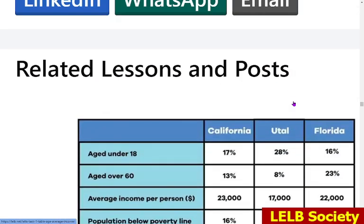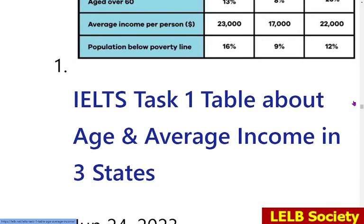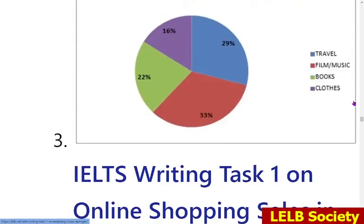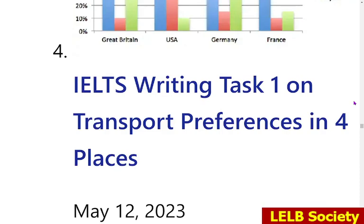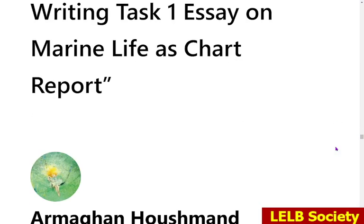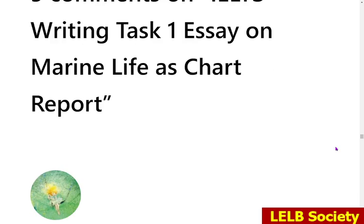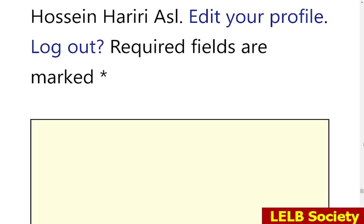You can see some related lessons: IELTS task 1 table about age and average income in three states, IELTS writing task 1 on analyzing maps, task 1 on online shopping sales as a pie chart, and task 1 on transport preferences in four places. You can visit our website at alibi.net and try all of our services for free before registration. Thank you very much for your attention — take care and see you soon in our next video.